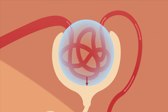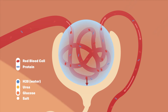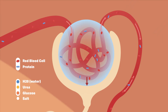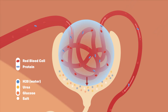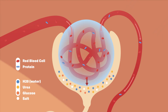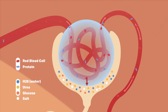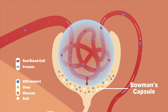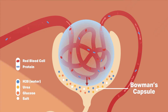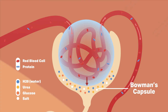The high pressure causes the liquid part of the blood — which contains water, urea, salts and glucose — to be forced out of the capillary knot and into the Bowman's capsule. Bigger molecules such as proteins and blood cells can't pass through the membranes and are not forced out.